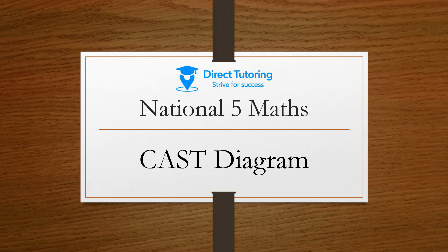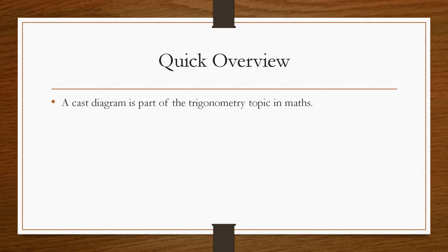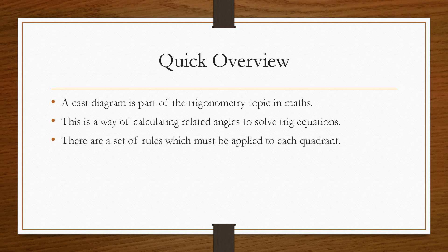Now this video isn't going to do any trig examples, this is just an in-depth analysis on how the CAST diagram works. So taking a quick overview, the CAST diagram is part of the trigonometry topic in maths. It's a way of calculating related angles to solve trig equations. There are a set of rules which must be applied to each quadrant. So the CAST diagram is split into four different sections and we'll see that in just a second.